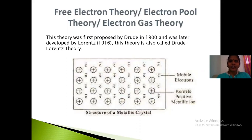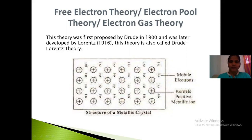The free electron theory or electron pool theory was proposed by Drude in 1900 and later developed by Lorentz, so it is also named the Drude-Lorentz theory. According to this theory, each atom in a metal crystal lattice loses its valence electrons. The electrons become free and form an electron sea, while the positive metal ions, named kernels, are situated in fixed positions and are held together by the electron sea floating in the crystal lattice.